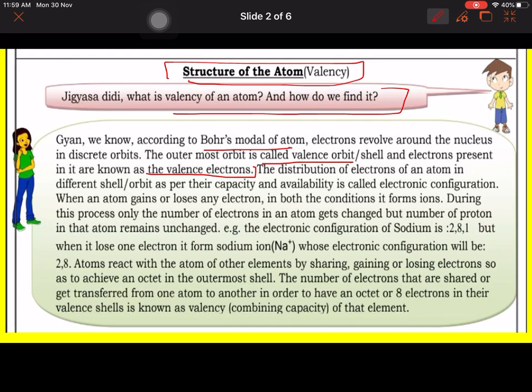The distribution of electrons of an atom in different shells as per their capacity and availability is called electronic configuration. We have talked about KLMN, how many will come in which shell.